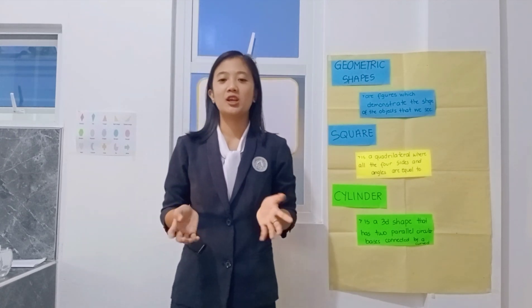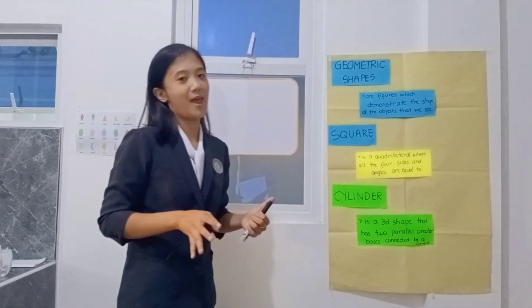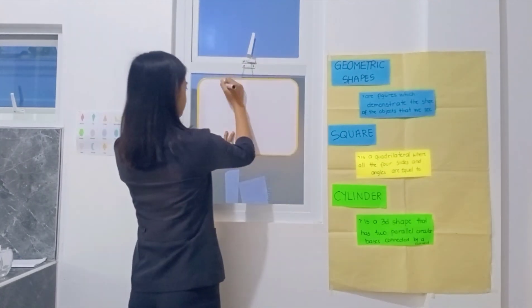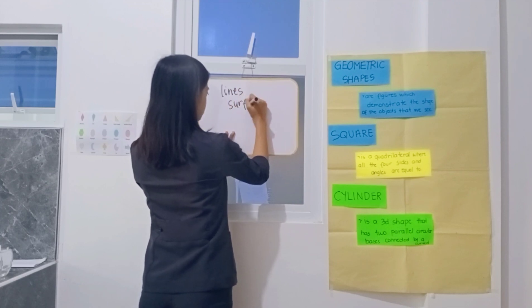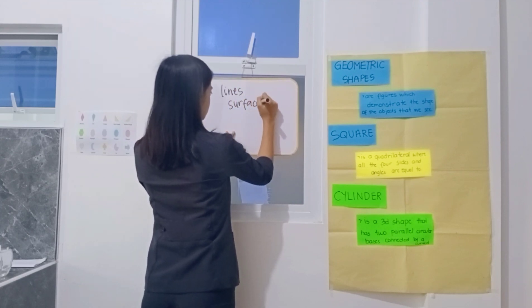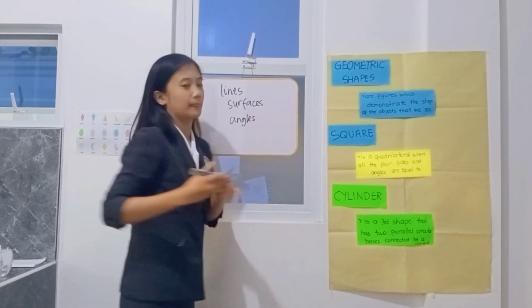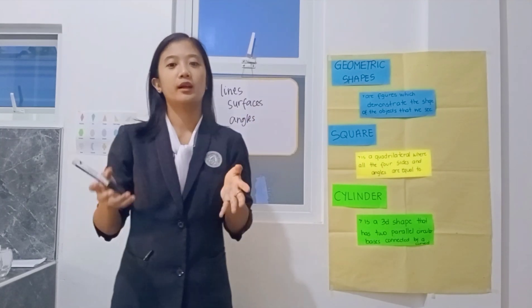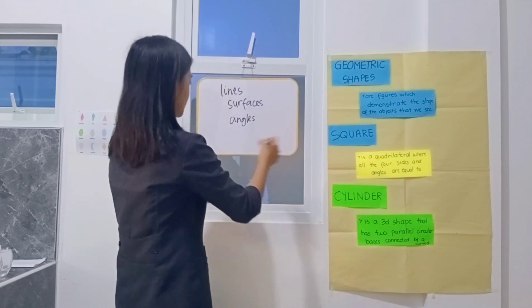In geometry, shapes are forms of objects which have boundary lines, surfaces, and angles.